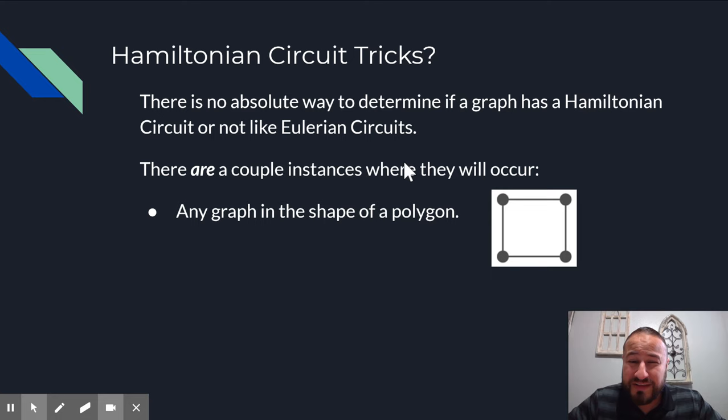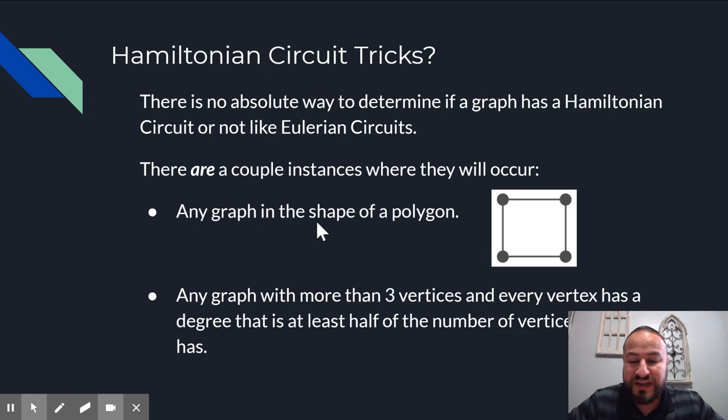Also, and this one is less, I mean, this is more used if you were doing really big graphs, but any graph that has more than three vertices and every vertex has a degree that is at least half of those number of vertices. So this particular case always means there's a Hamiltonian circuit. I don't expect you guys to remember this one is a little bit harder than the even degree ones for Eulerian. But this is another way that they will always have a Hamiltonian circuit.